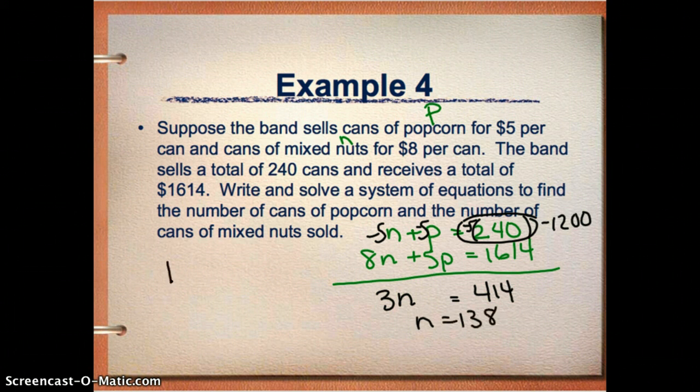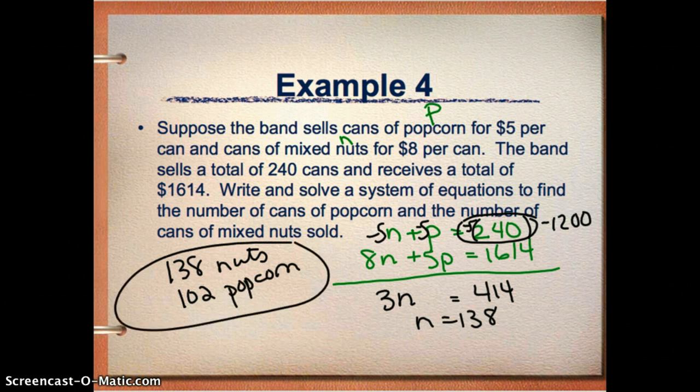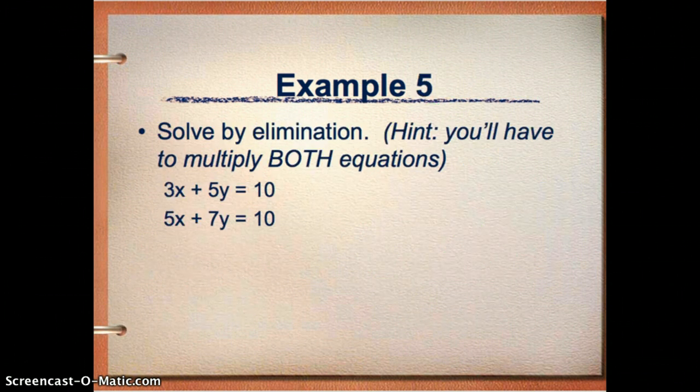So I think I sold 138 cans of nuts. Which means I should have sold 102 cans of popcorn. And hopefully that's what you got. I'm not going to show you the check this time for sake of time.